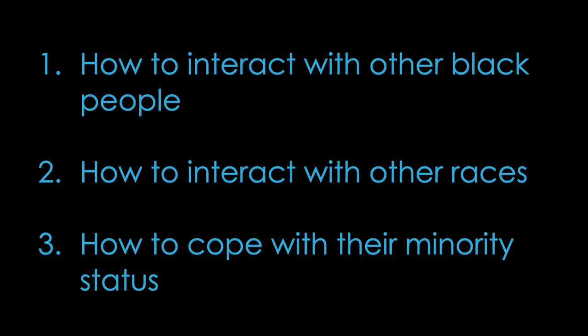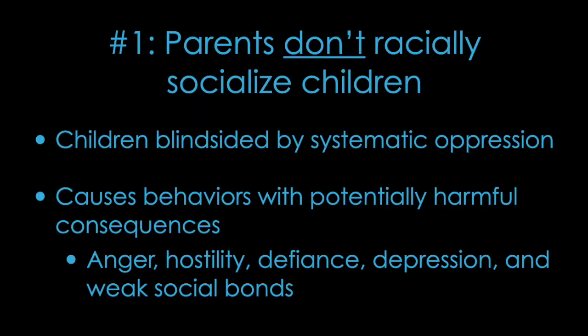The theory of African American offending suggests that every Black or African-American person is going to have a similar worldview and that at some point in their lives they will be discriminated against because of the color of their skin. Parents of Black or African-American children must racially socialize their children by teaching them three things: how to interact with other Black people, how to interact with other races, and how to cope with their minority status. If they're unable to teach their children those three things, there are three possible outcomes. In the first scenario, if parents don't racially socialize their children at all, the kids are going to be blindsided when they realize that society is oppressing them because of the color of their skin and they won't know how to deal with it.